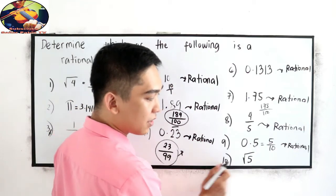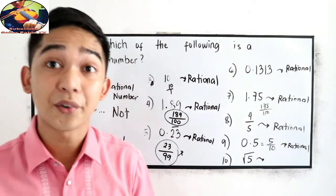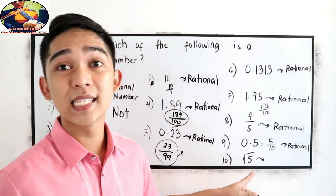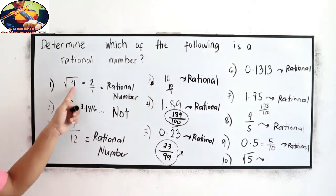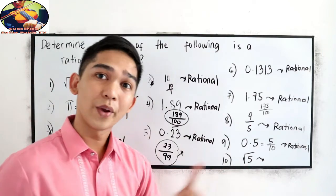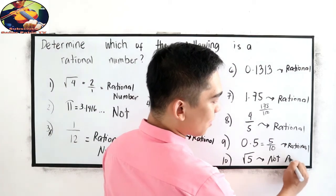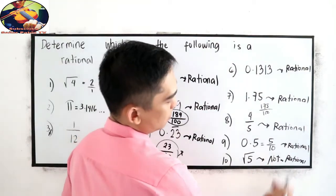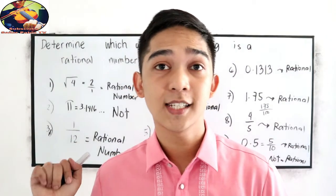Number 10: square root of 5. Square root of 5 is an irrational number, because 5 is not a perfect square. Unlike number 1, where 4 is a perfect square and square root of 4 is 2, in this case we cannot write square root of 5 as a rational number. So this is not a rational number.